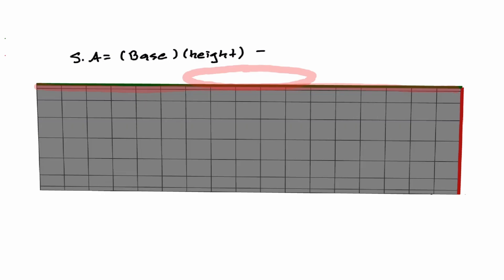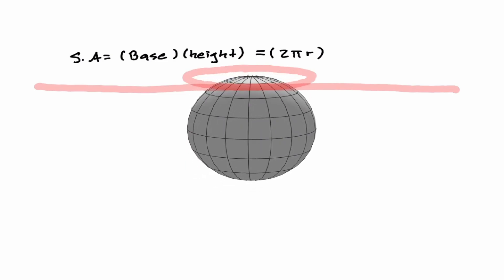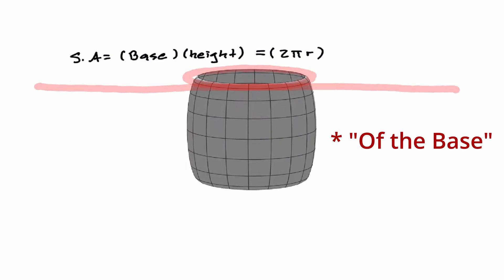So now we can say that the base is equal to the circumference of the circle, which we can always find by 2πr, where r is the radius of the sphere.